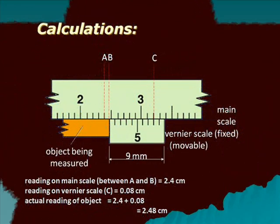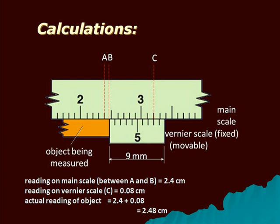Here we are taking an example where Vernier zero is between 2.4 and 2.5, therefore the main scale reading is 2.4. Here, the 8th line of the Vernier is coinciding with one of the main scale divisions, therefore Vernier scale reading is 8 into least count, that comes as 0.08. The actual reading is nothing but 2.4 plus 0.08, that is equal to 2.48 cm.